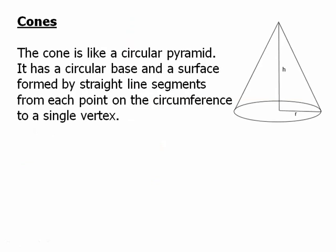Now we'll talk about cones. A cone is like a circular pyramid. It has a circular base and a surface formed by straight line segments from each point of the circumference up to a single vertex. And so that makes this slanted curving surface that goes up to the point.